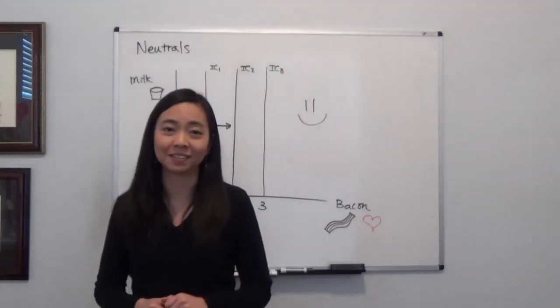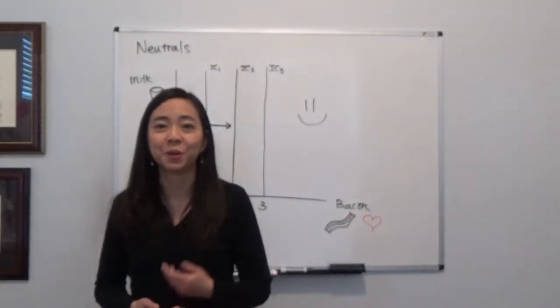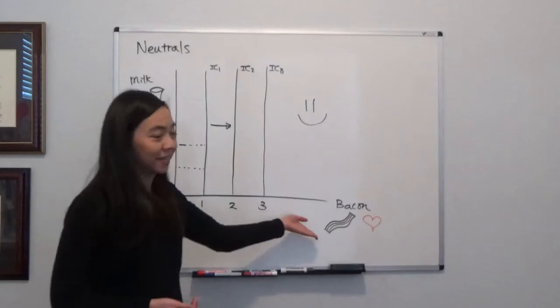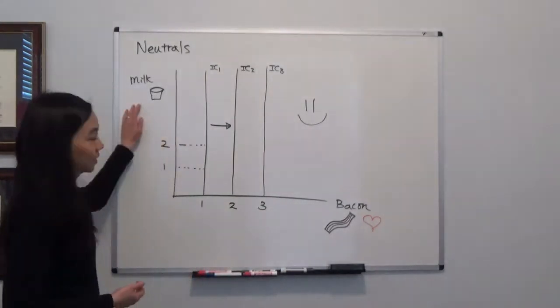So we're going to continue with our scenario where you're going to babysit your little cousin Jason. Now suppose Jason loves bacon and he treats milk as a neutral good.